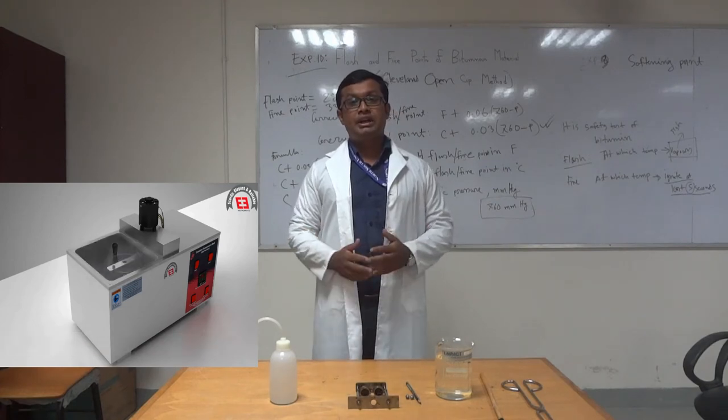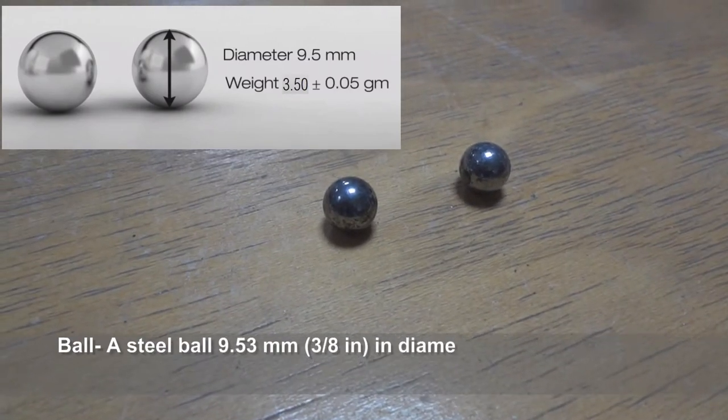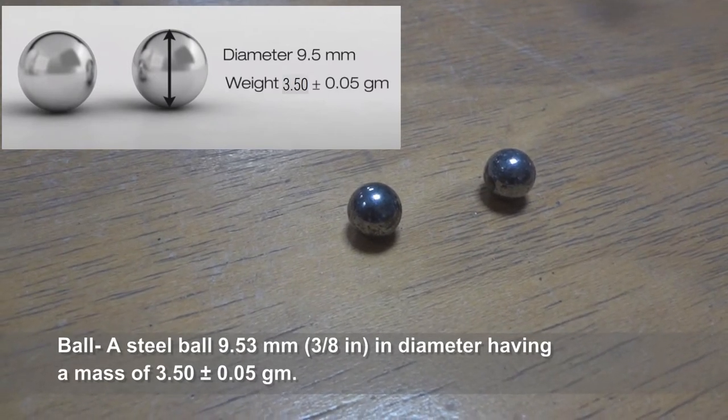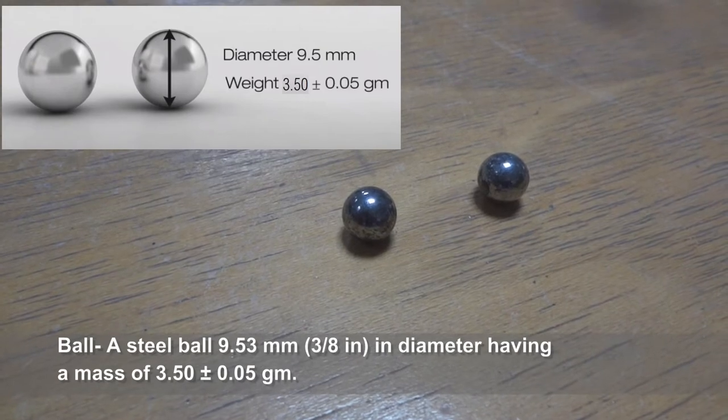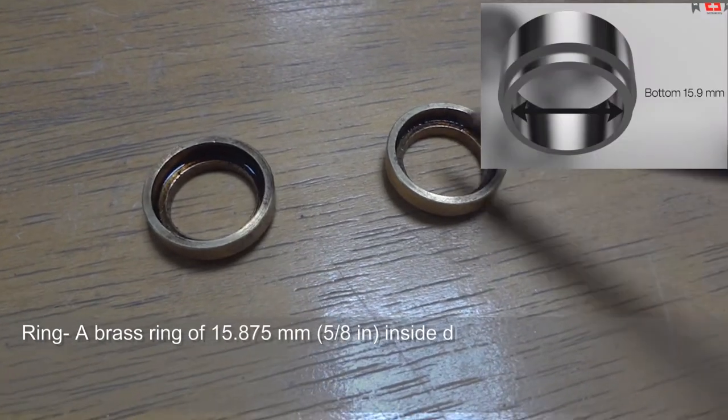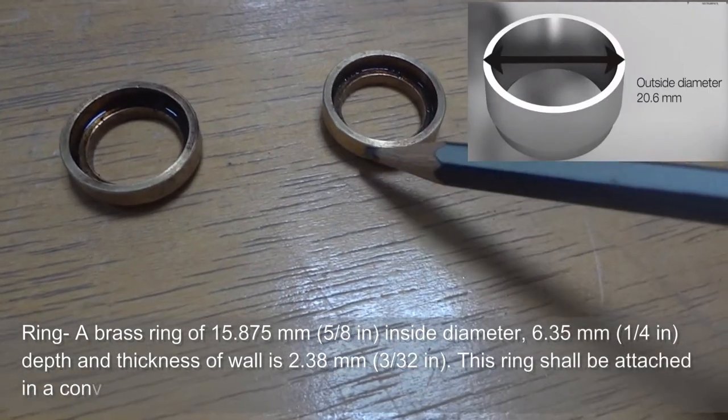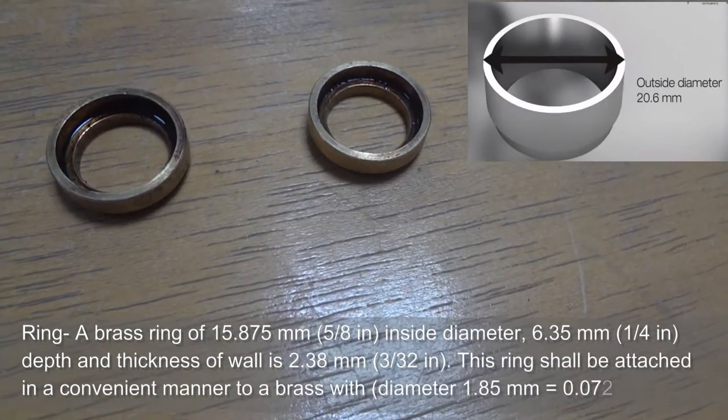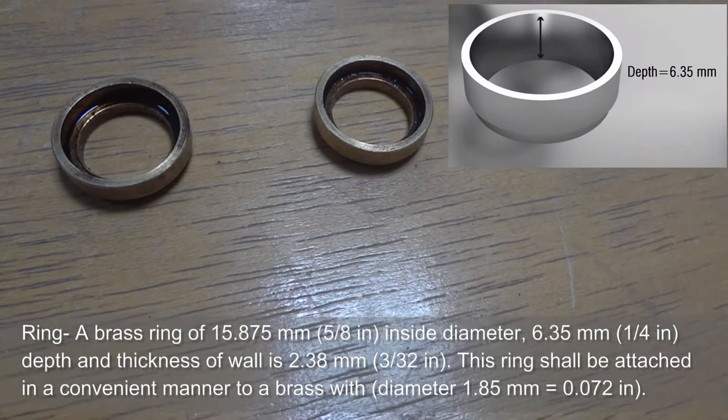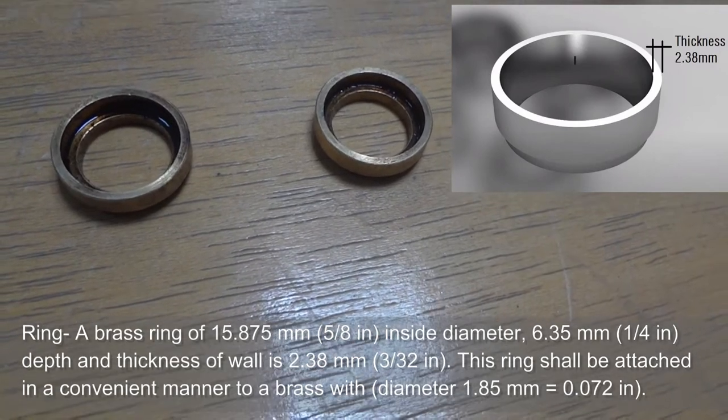I will show you the required apparatus for this test. Two steel balls, each of diameter 9.5 mm and weight 3.50 plus or minus 0.05 grams. Two brass rings: inside diameter is 15.9 mm and outside diameter is 20.6 mm, depth is 6.35 mm and thickness of the wall is 2.38 mm.